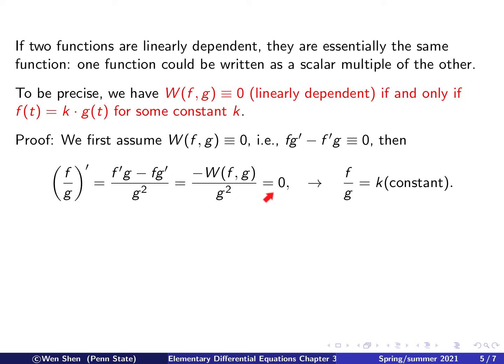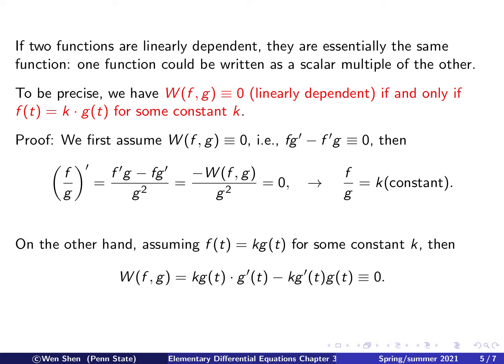Note that this claim holds provided g is not identically zero — a function that is identically zero is linearly dependent with any function. For the other direction, assume f equals k times g. Then the Wronskian equals f times g prime minus f prime times g, which becomes k g times g prime minus k g prime times g, which is identically zero. This completes the proof of both directions.